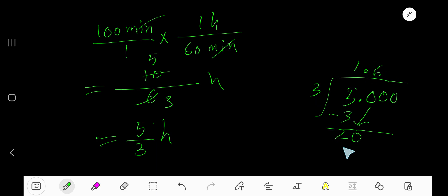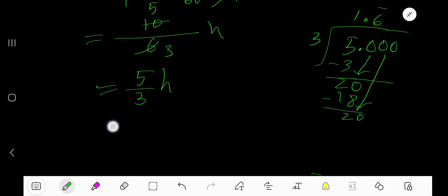3 goes into 20 six times. 6 times 3 is 18. Subtract, we get 2. Bring down next zero. 3 goes into 20 again 6 times. This means this 6 is repeating. You can place a bar here, so 1.6 bar hour. And this is the hour result.